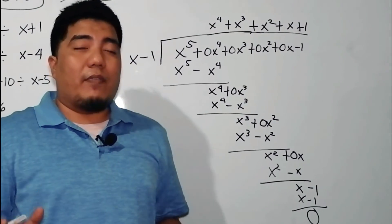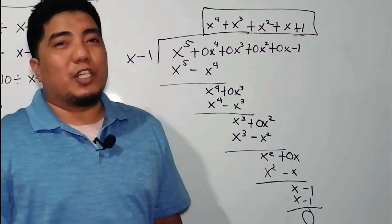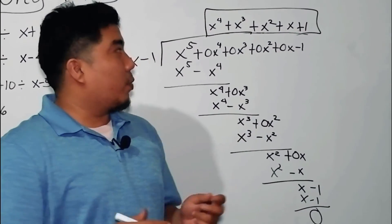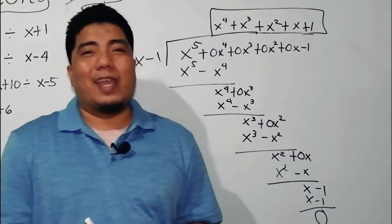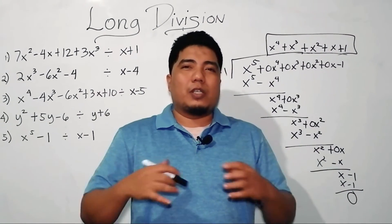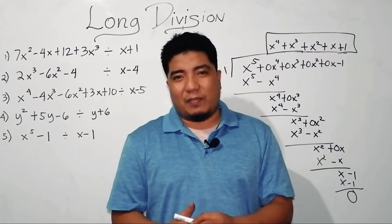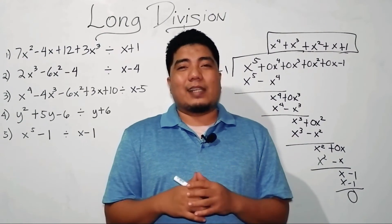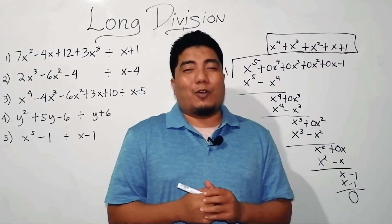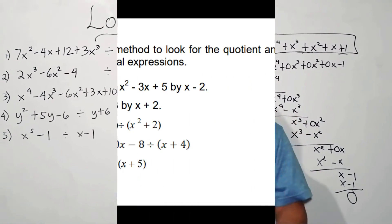We don't have any remainder. Therefore, this will be your final answer: x to the fourth plus x cubed plus x squared plus x plus 1. I hope you have learned how to divide polynomials using long division. Now is the time I will challenge you whether you have learned or even mastered our topic for today.